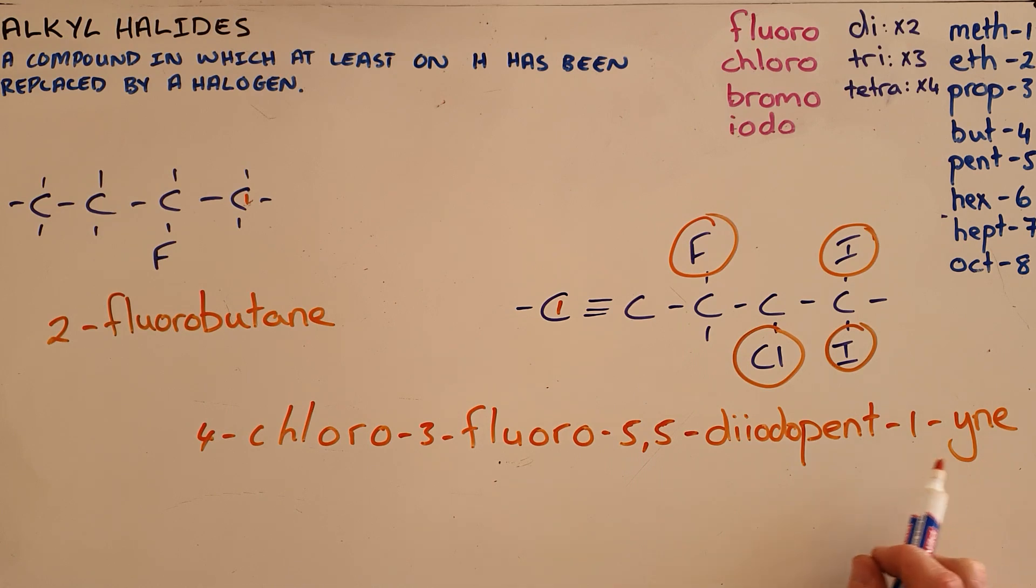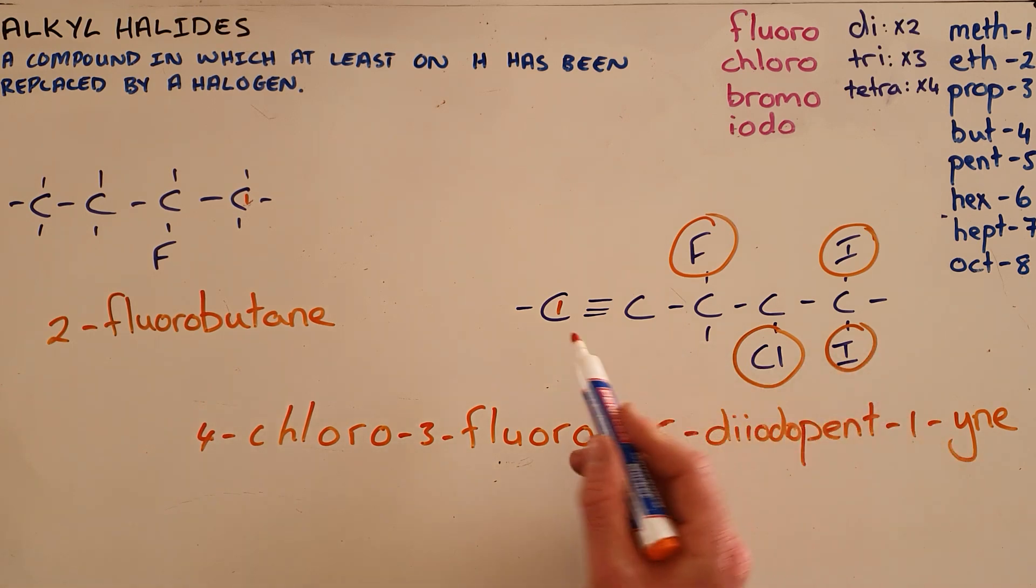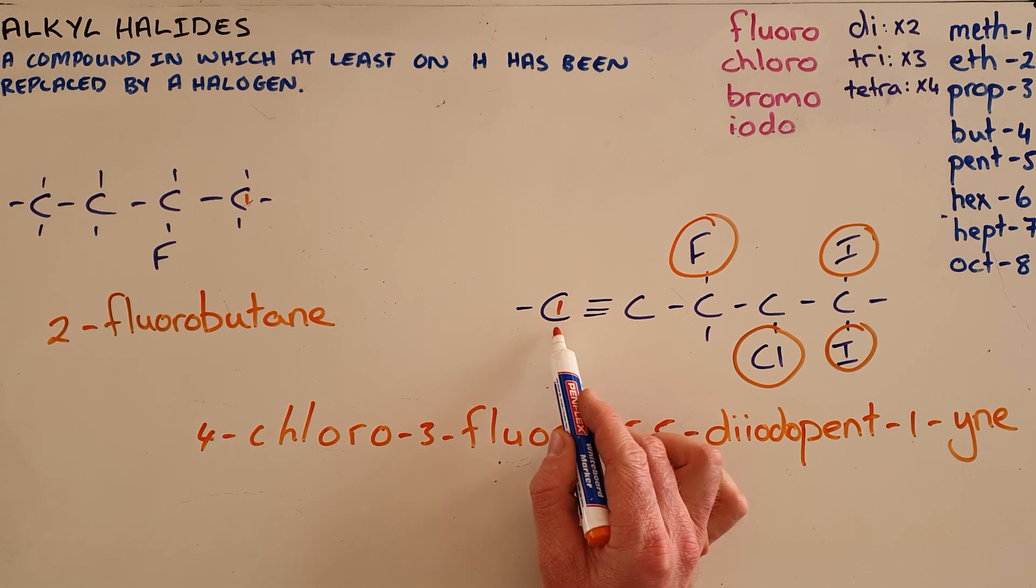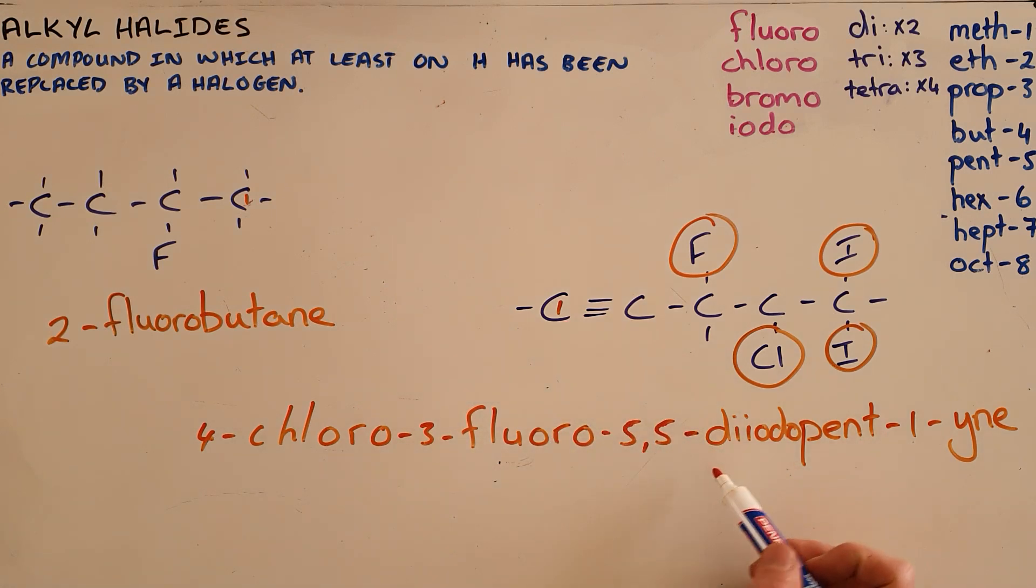Firstly, the alkyne triple bond functional group takes preference over all of the others, which is why we always number from the side that gives it the smallest positional number. Secondly, we arrange these prefixes alphabetically.